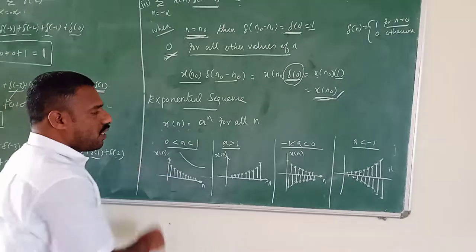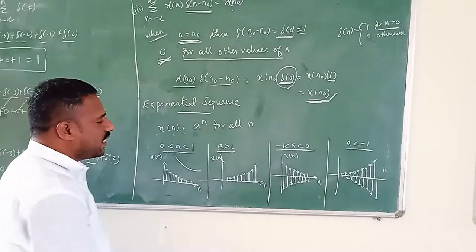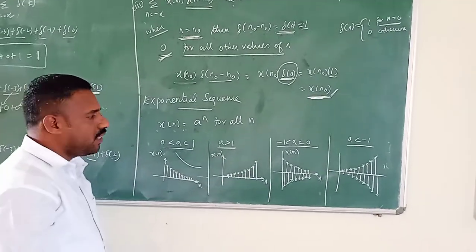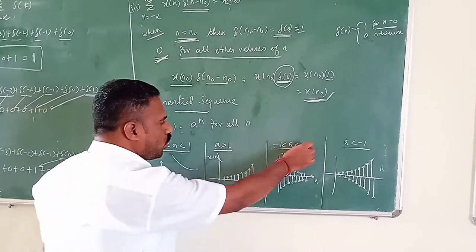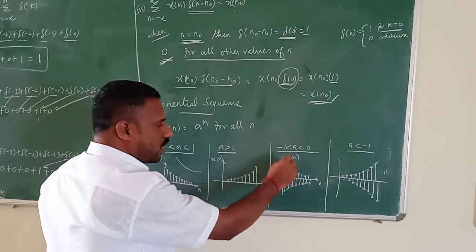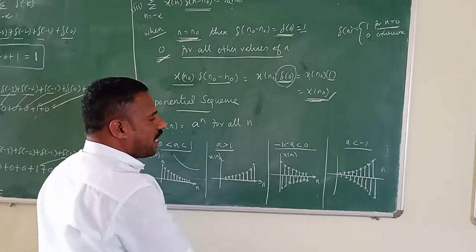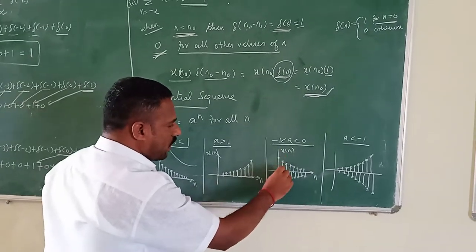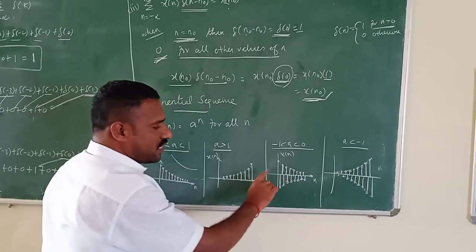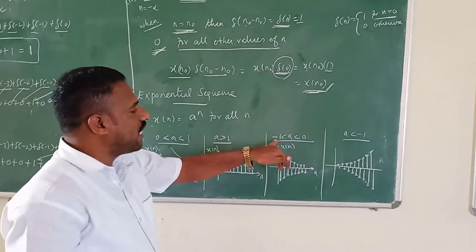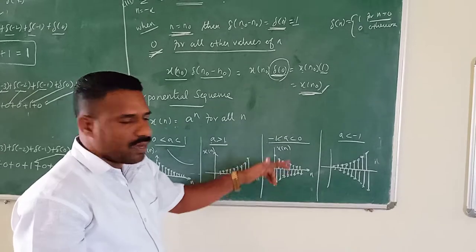When the a value is greater than 1, it is an increasing exponential curve in the positive axis. When the a value is between minus 1 and 0, you get a decaying exponential curve in both the positive axis and the negative axis — a zigzag pattern where one value is positive, the next is negative, alternating. So when a is between minus 1 and 0, the decaying exponential curve appears on both the positive and negative sides.